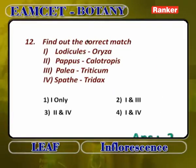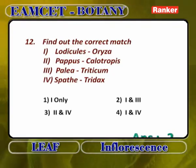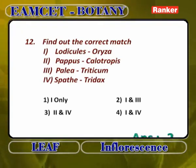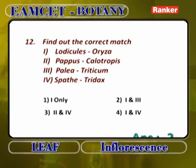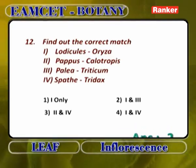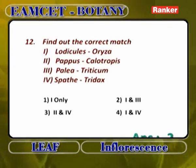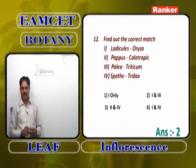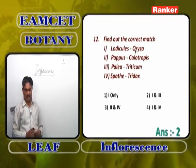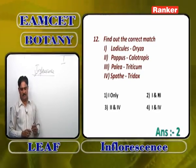Find out the correct match: Lodicules in Oryza is correct — in compound spike inflorescence of any grass plant like Oryza, the reduced perianth lobes are called lodicules. Pappus cannot be seen in Calotropis — pappus means hairy persistent calyx, not found in Calotropis. Palea in Triticum is correct — reduced bracteoles called palea in compound spike inflorescence. Spathe is found only in spadix inflorescence, not in Tridax (which has head inflorescence). Answers: 1 and 3 — lodicules in Oryza and palea in Triticum.